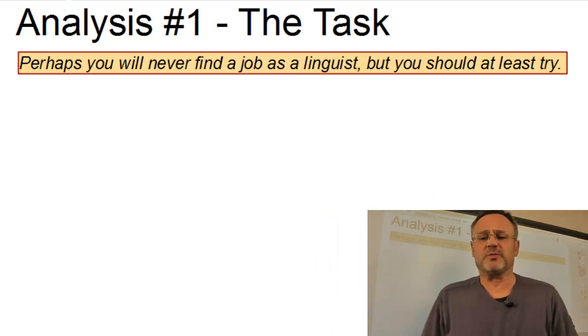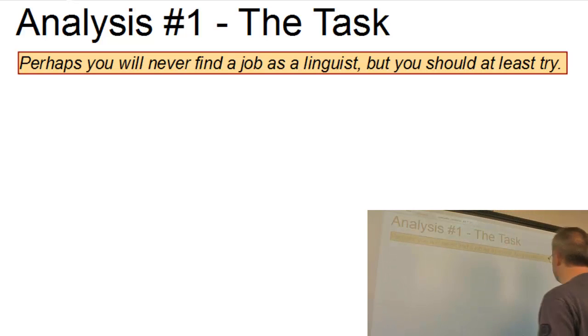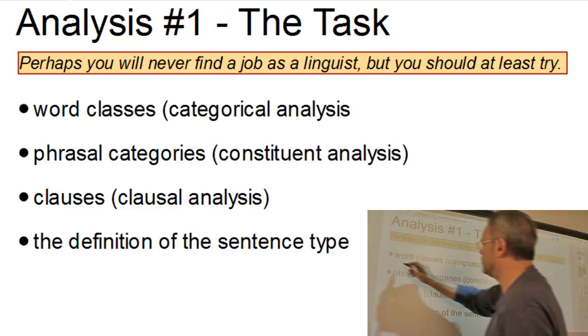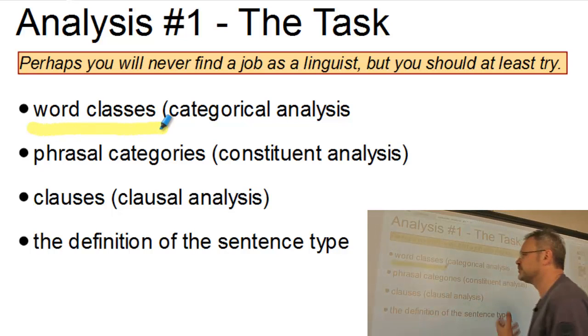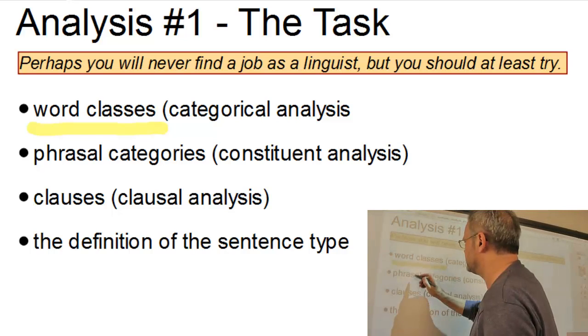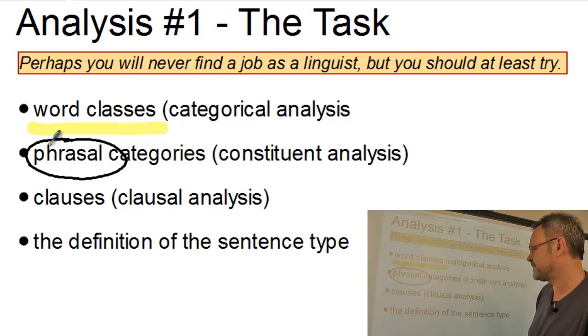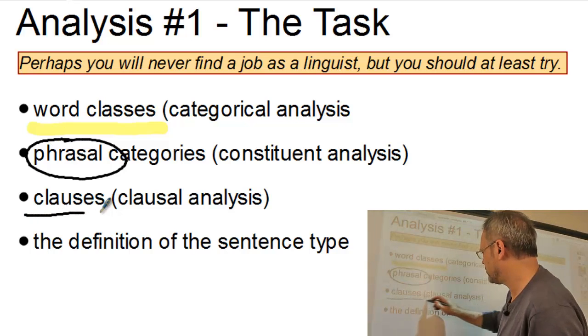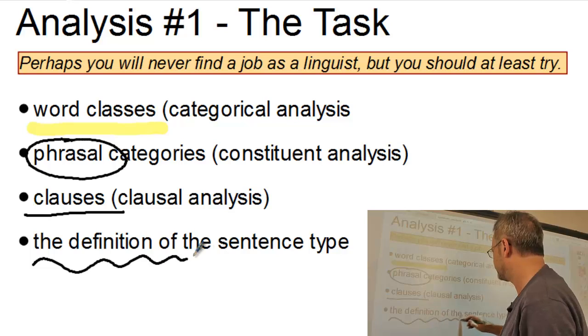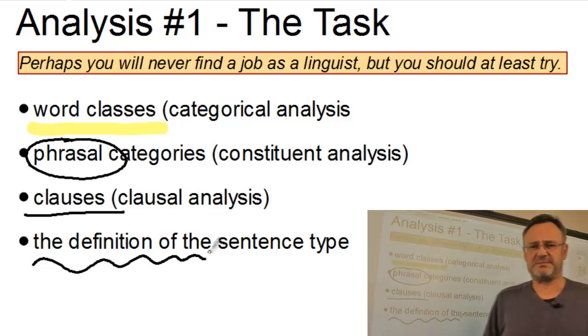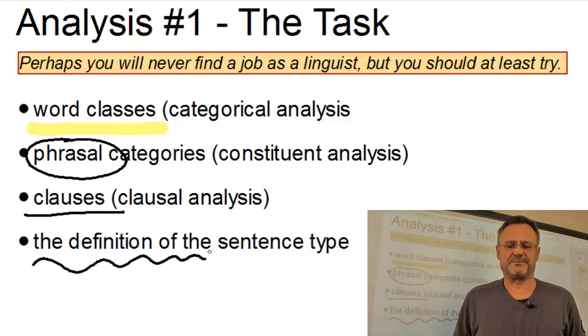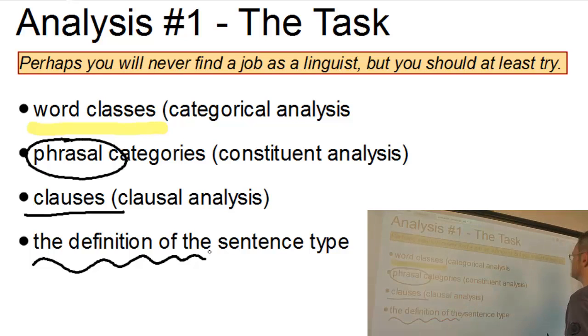Well, this is what we're going to do. First, we will analyze the word classes. We will identify the word classes, that is the simple categories within the sentence. Then we will group these categories into phrases, so we will perform a phrasal or some people call it a constituent analysis. We will then look at the clauses within the sentence and will finally define the sentence type that is involved here. So let us now look at the various levels.